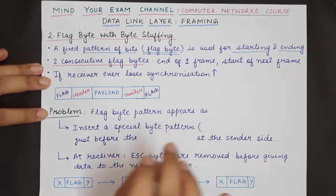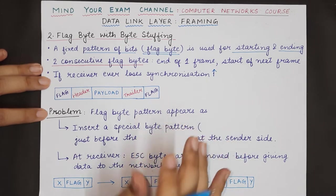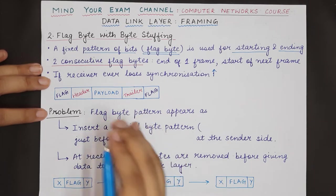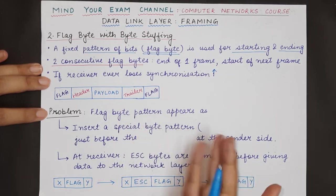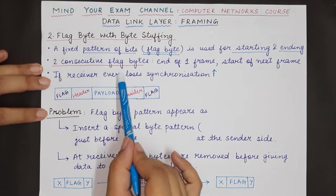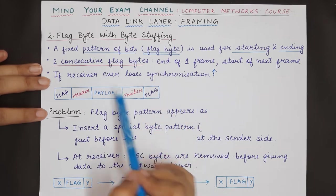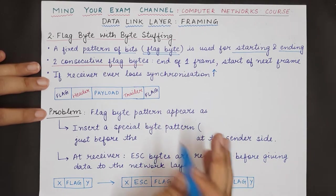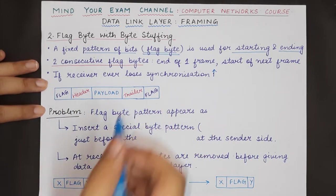This is how the receiver overcomes the disadvantage of the byte count technique. In the byte count technique, if an error occurs the entire synchronization is lost — not only that particular frame with the error, but all other frames also cannot be distinguished. But in this case the receiver only has to look for two consecutive flag byte patterns in the stream to find the delimiter.